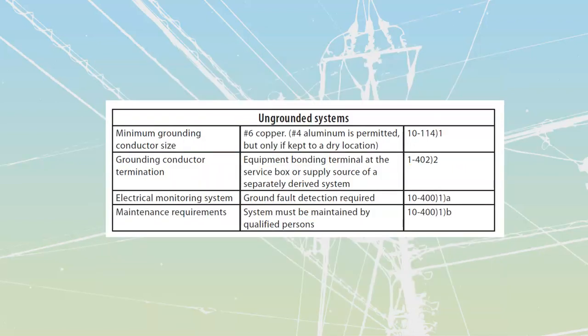For an ungrounded system, the minimum ground conductor size is going to be the same — number six copper or number four aluminum if kept in a dry location. The termination has to be done to the equipment bonding terminal at the service box or at the supply source of the separately derived system — coming off generators, inverters, or anything like that on an ungrounded delta system. We do have to have ground fault detection, required by 10-400-1-A, and we have to have a system maintained by a qualified person — somebody that has a contract or operating permit for the site.